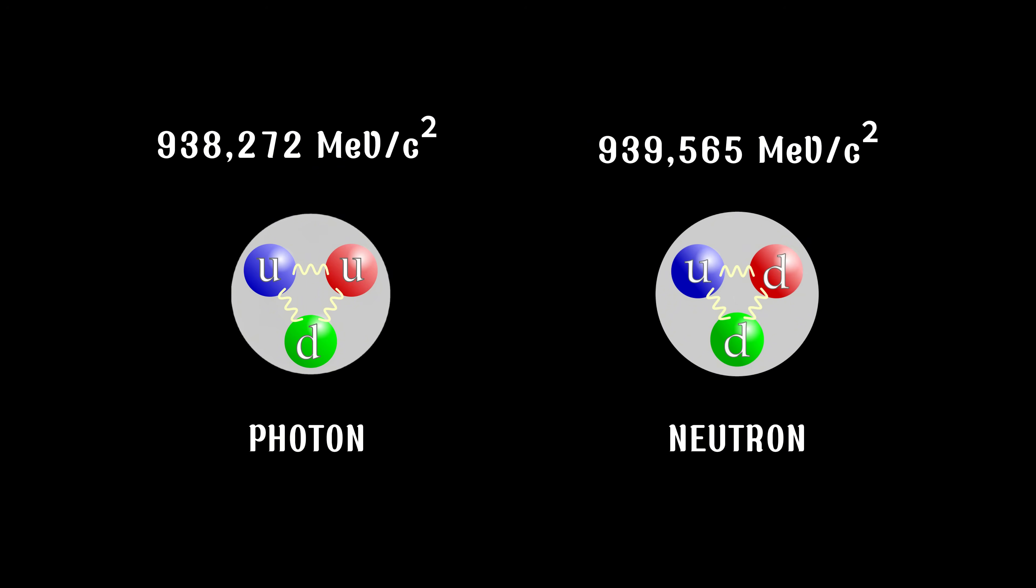Let's break it down. A proton has a mass of about 938.272 MeV/c². A neutron has a mass of about 939.565 MeV/c². The neutron is slightly heavier than the proton. This mass difference partly stems from the quark configuration.